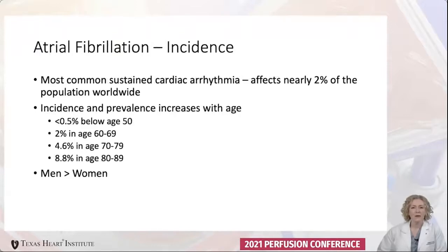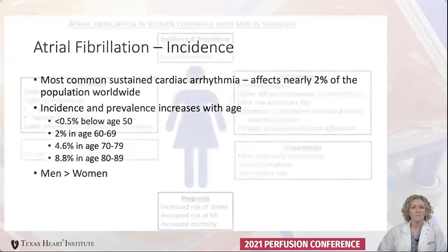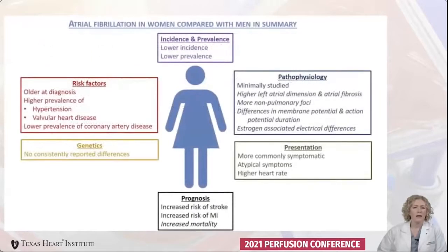AFib is the most common cardiac arrhythmia, affecting nearly 2% of the worldwide population. The incidence and prevalence increases with age, and patients 80 and above have an over 8% incidence. Men are affected more than women, but when women experience AFib, they usually have many more symptoms, more complications, and a worse overall quality of life compared to men.